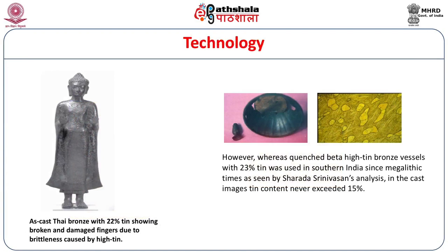Regarding alloy composition, in the South Indian bronzes the tin content never exceeded about 15 percent, which is very sensible because bronze becomes very brittle as you add more tin. By contrast, you can see here an image of a Thai bronze with 22 percent tin, where the fingers look broken and damaged due to the brittleness caused by such high tin content. However, there is a very long-standing skilled tradition in Southern India going back to megalithic times of using bronze with a high tin content of 23 percent, whereby the brittleness was overcome by quenching to get the beta phase of bronze, which had musical properties and improved the tensile strength. This extraordinary alloy was used in parallel, whereas for the cast image they were very sensibly using mainly leaded bronzes.